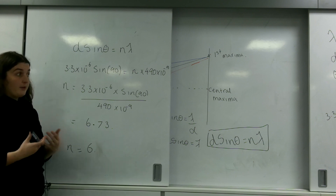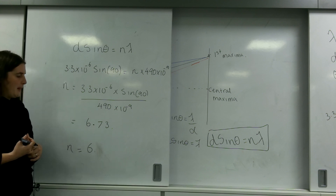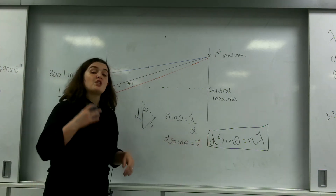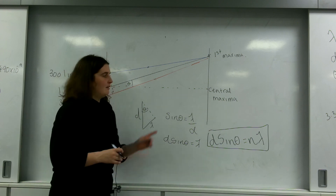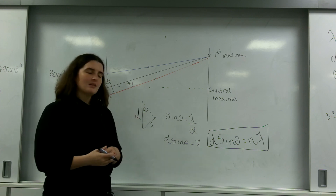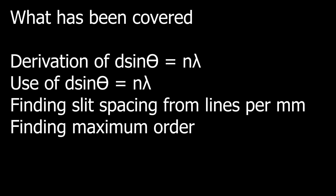Diffraction gratings are very important when we talk about electron diffraction or looking at atomic sizes in second year. Remember, this formula can only be used for diffraction gratings. If you want Young's double slit, see the other video. This is the derivation you need to know — how to get the formula from the diagram. Thank you.